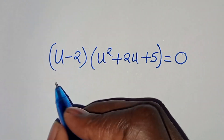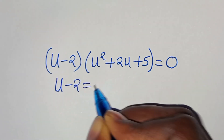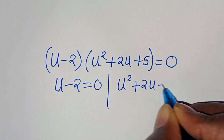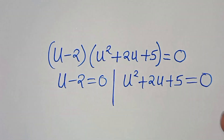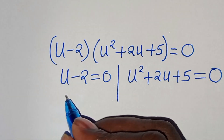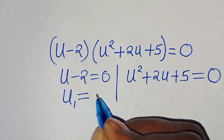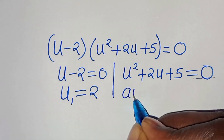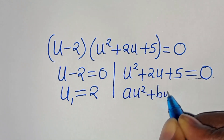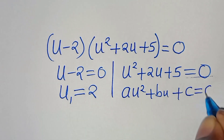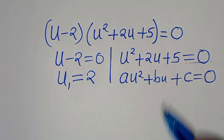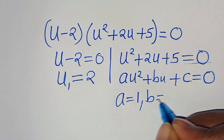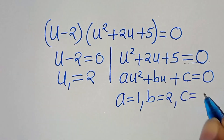Now we have two parts here. From the first part, u minus 2 equals 0, so u₁ is equal to 2. The second part is a quadratic equation of the form au squared plus bu plus c equals 0, where a is equal to 1, b is equal to 2, and c is equal to 5.